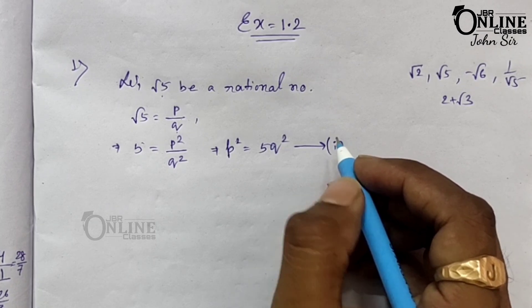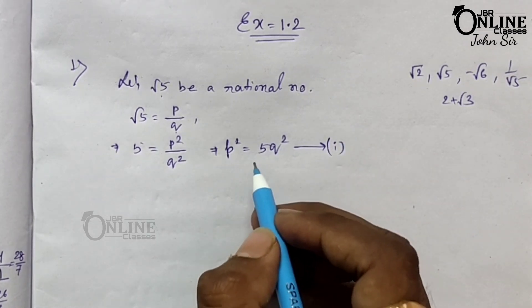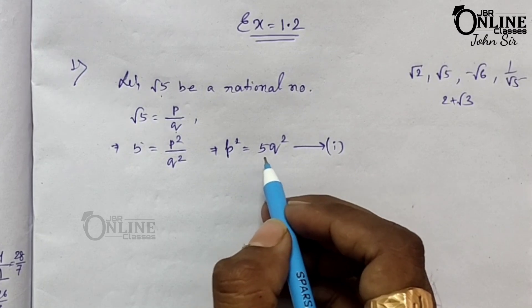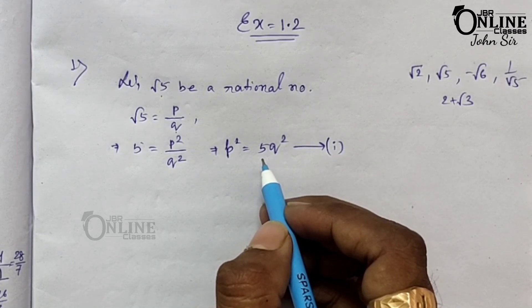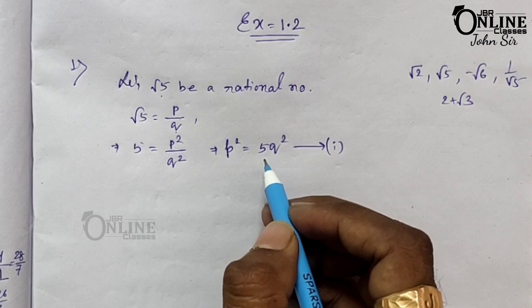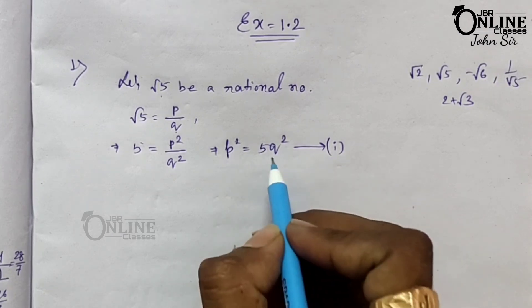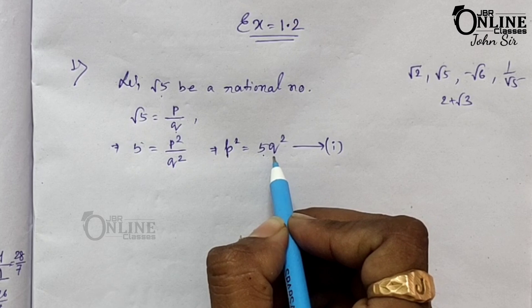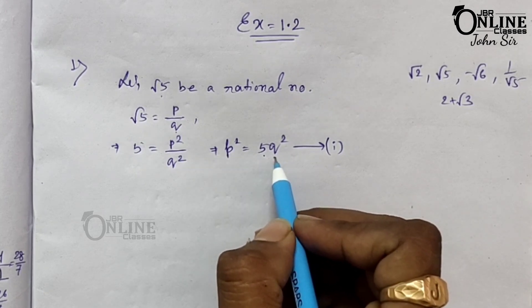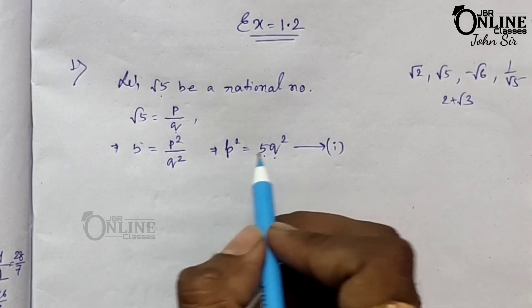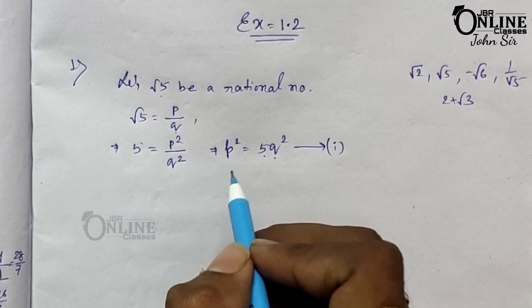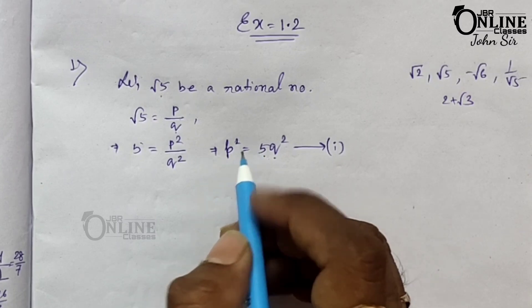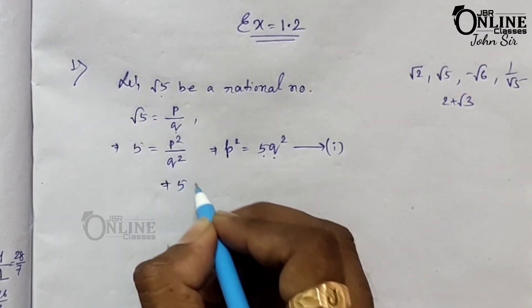Now, as 5 divides 5q², then 5 divides p² also. And since 5 is a prime number, that means 5 divides p.